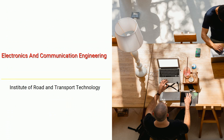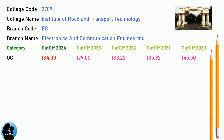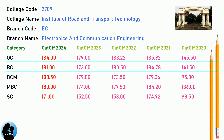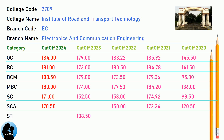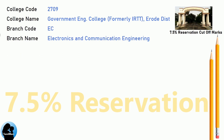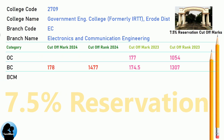DNA Cut-Off for Institute of Road and Transport Technology in Electronics and Communication Engineering. DNA 7.5 Reservation Cut-Off for Government Engineering College, formerly IRTT, Erode District in Electronics and Communication Engineering.